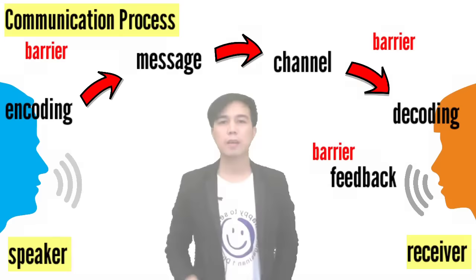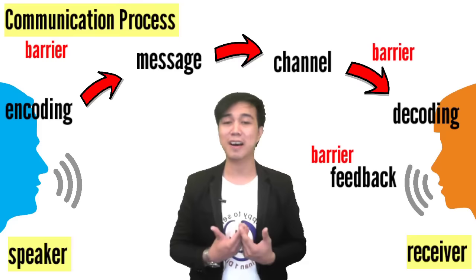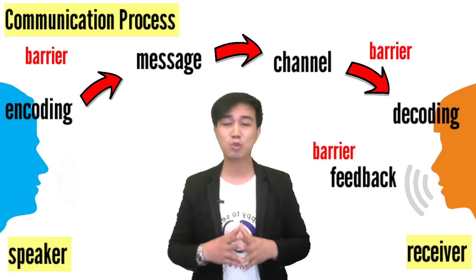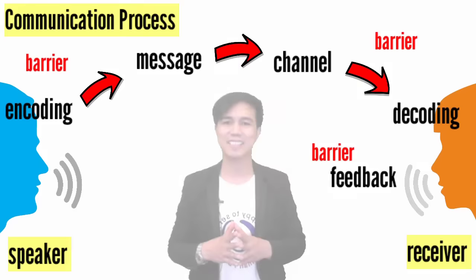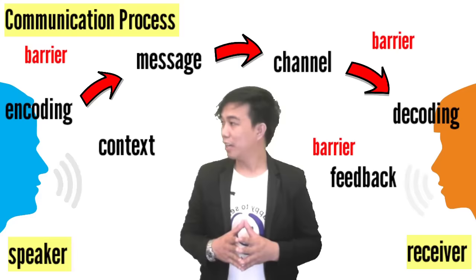The other one is the internal noise or the internal barrier. These barriers happen in us. Since it is not visible, it is hard for us to control. It could be feelings, emotions, or anything that hinders the communication process. The context is the environment where communication takes place. It is also the setting or the situation where the communication process occurs.